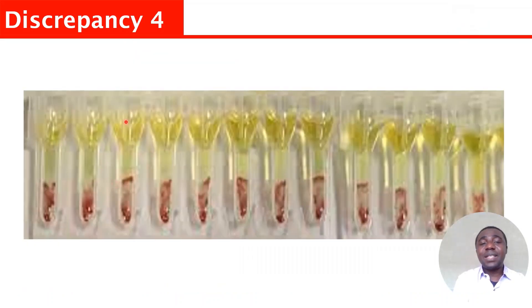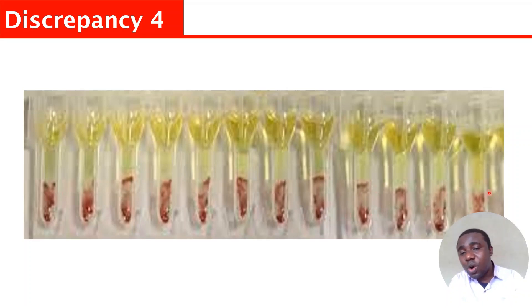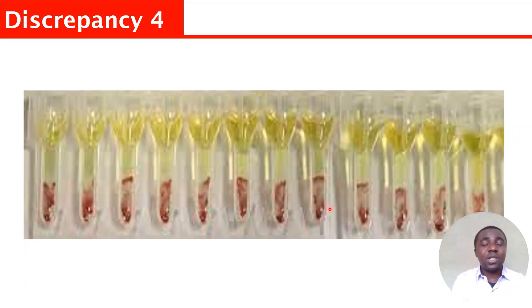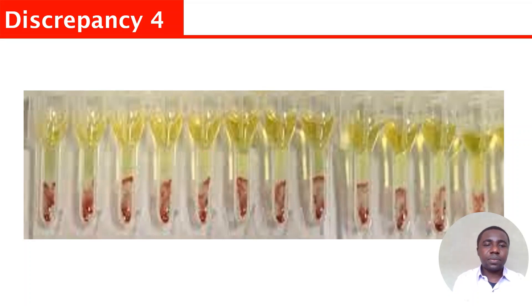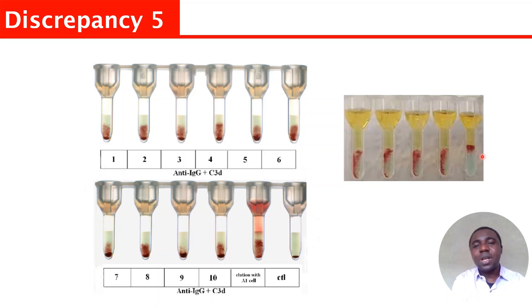Factors such as cold agglutinins, C3D complement, or daratumumab can lead to pan-reactive results in antibody screening or antibody panel. Once you see reactions throughout all wells like this, if it is not a known specific antibody in the panel, it could be due to any of those factors. In this example, the patient has C3D complement, giving a positive result in all wells. These are the things that can affect blood group and antibody screening.